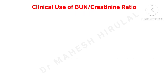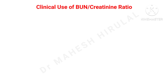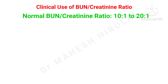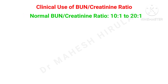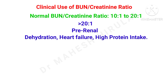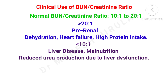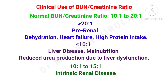Clinically, the blood urea nitrogen to creatinine ratio is used to differentiate and assess renal and non-renal causes. The normal ratio should be between 10:1 and 20:1. If it is more than 20:1, it signifies pre-renal causes like dehydration, CCF or high protein intake. If the ratio is less than 10:1, it signifies liver dysfunction. If the ratio is between 10:1 and 15:1, it signifies intrinsic renal diseases like glomerulonephritis.